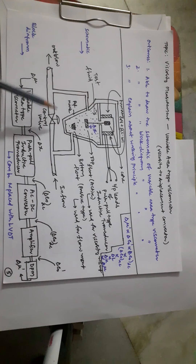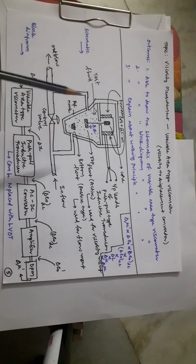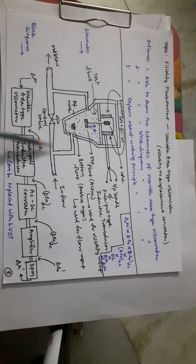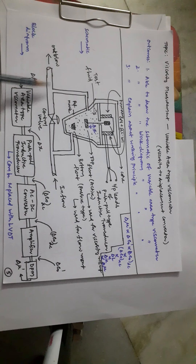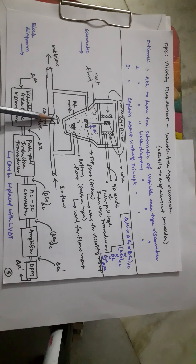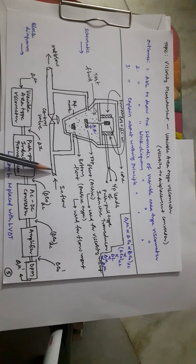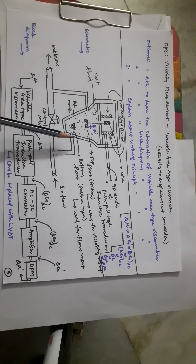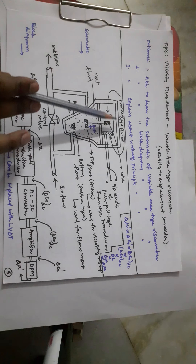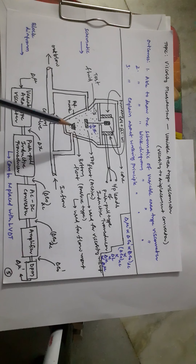This is the schematic of the variable area type viscometer. There is an inlet flow and an outlet flow — a fluid whose viscosity is to be measured passes through a flow pipeline. To control the flow rate, a control valve is used. Opening or closing this control valve varies the output flow rate with respect to the input flow rate.